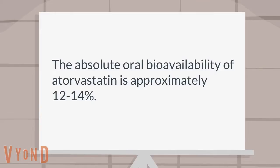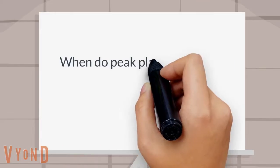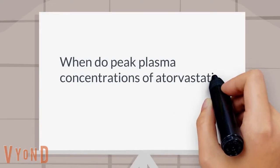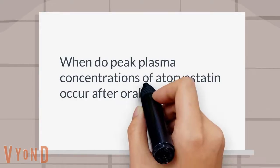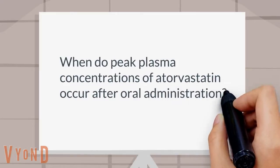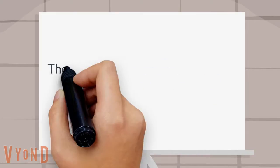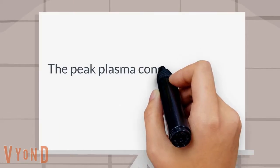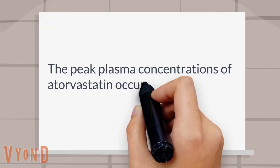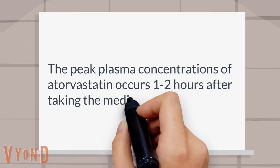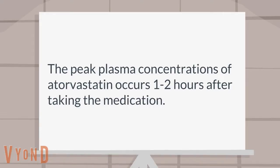When do peak plasma concentrations of atorvastatin occur after oral administration? The peak plasma concentrations of atorvastatin occur 1-2 hours after taking the medication.